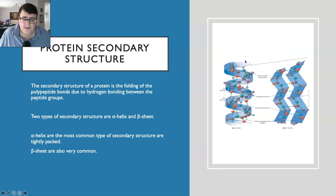The secondary structure is how the folding occurs with the polypeptide bonds due to hydrogen bonding between the peptide groups. There are two types of secondary structure: alpha helix or beta sheet. The alpha helix is a helical shape, whereas the beta sheets are almost like layers folded on top of each other. Both are very common. The folding that occurs is based on the amino acids in the primary structure, because different amino acids will fold differently depending on how they bond with other amino acids.